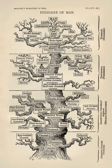Current research has widened to cover the genetic architecture of adaptation, molecular evolution, and the different forces that contribute to evolution including sexual selection, genetic drift and biogeography. The newer field of evolutionary developmental biology investigates how embryonic development is controlled, thus creating a wider synthesis that integrates developmental biology with the fields covered by the earlier evolutionary synthesis.